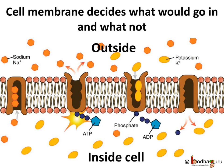Plasma membrane is called a selectively permeable membrane, as the membrane determines what substances are to be allowed entry or exit from the cell.